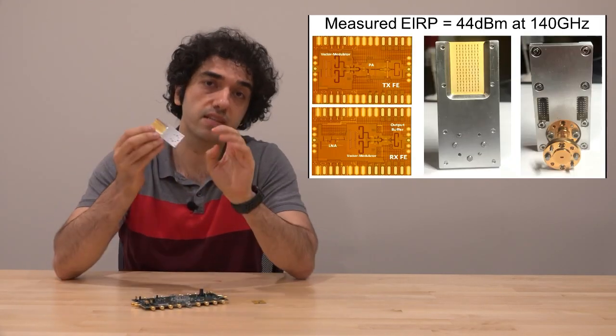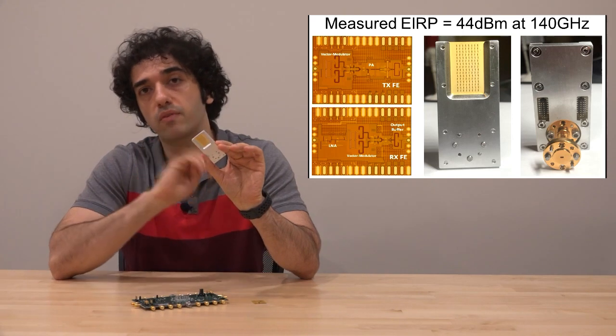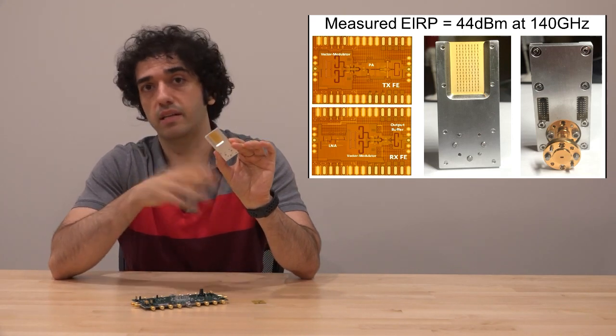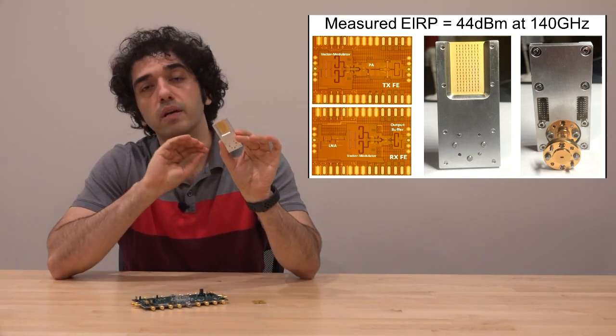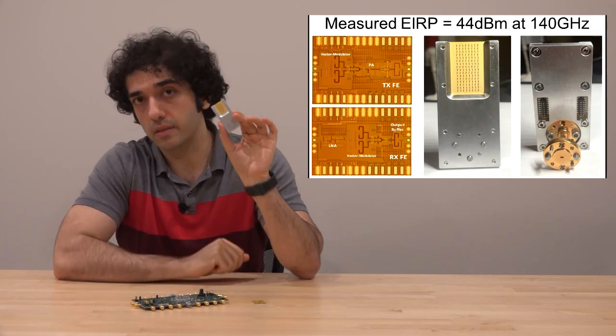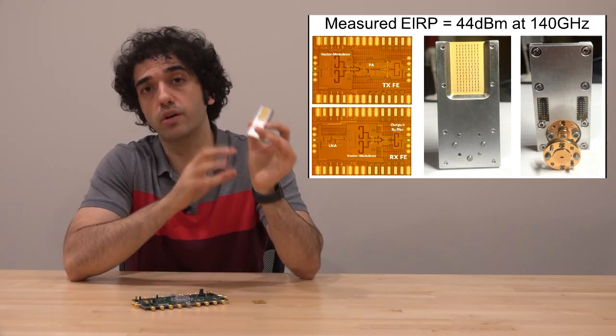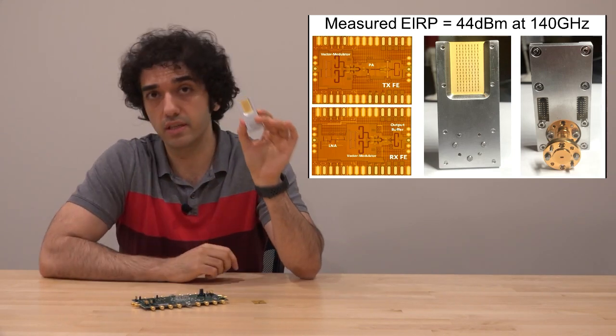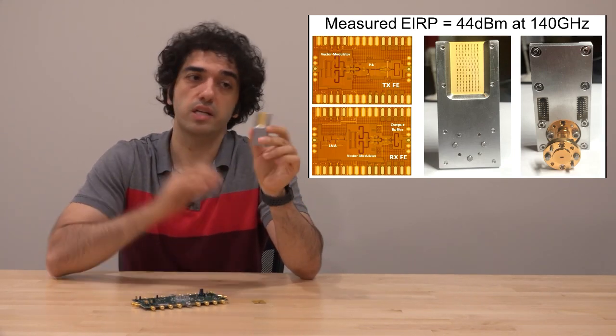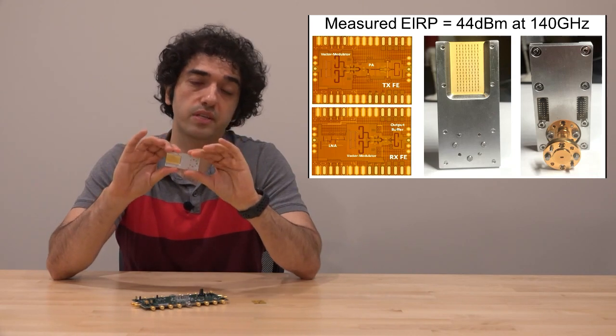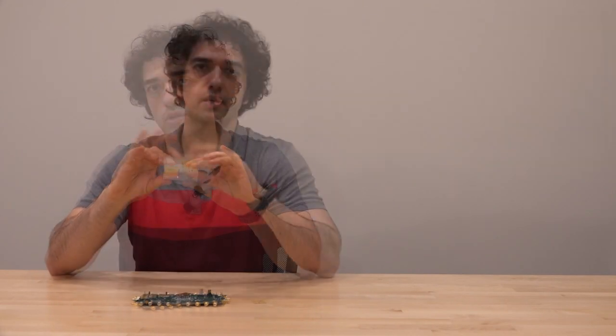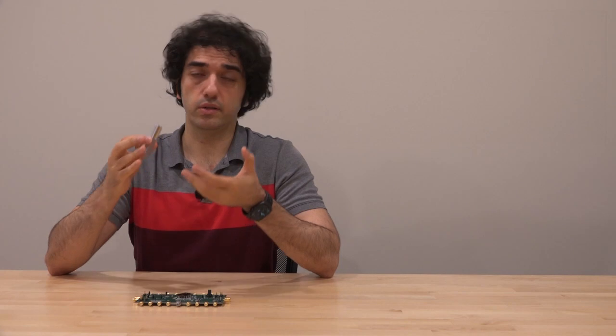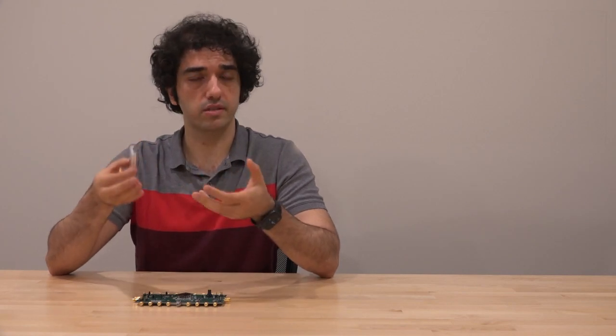We have, in fact, built phased arrays on glass using some of our own phase shifter elements, LNAs and PAs. These are single chip phased array elements. There are eight of them on this module, and we have measured ERP of 44 dBm at 140 GHz, which again is a world record, especially because of the level of integration and the phased array on glass architecture. And this is indeed a very interesting domain to explore with a lot of innovation still to come.